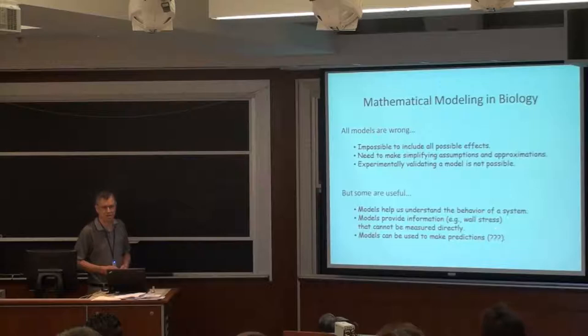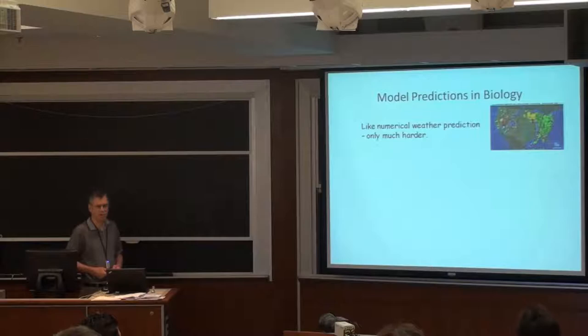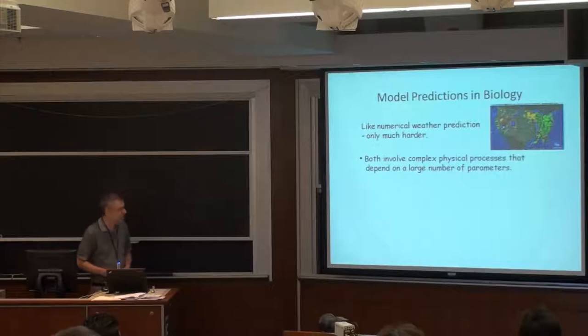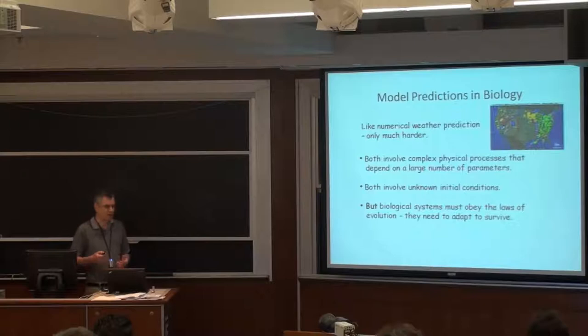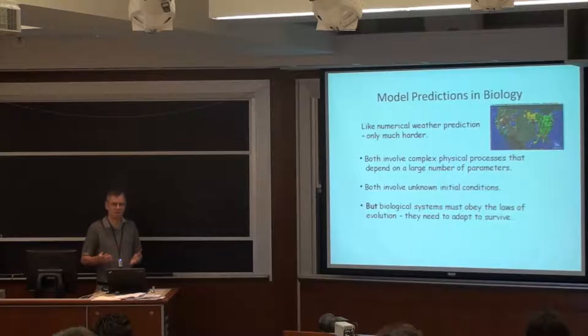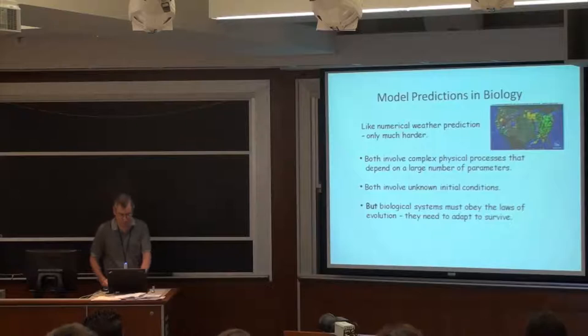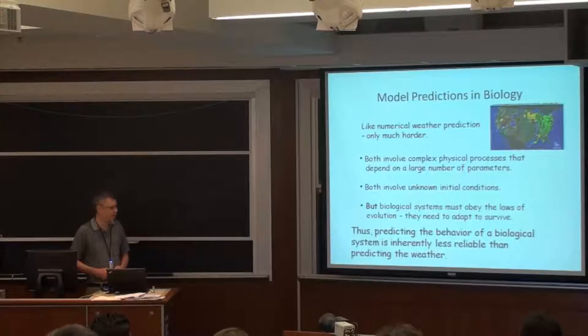Some would argue that models can be used to make predictions. I question that because predicting the behavior of a biological system is a lot like numerical weather prediction, only much harder. Both involve complex physical processes that depend on a very large number of parameters, many of which have unknown values, especially in biology. Both involve unknown initial conditions. What makes biology harder is that biological systems must also obey the laws of evolution — they must adapt to survive, so the system and its parameters are constantly changing.